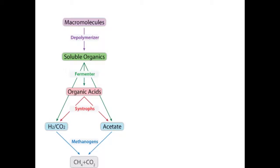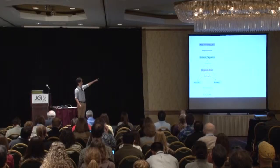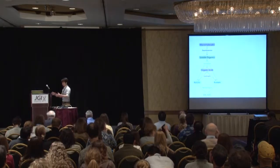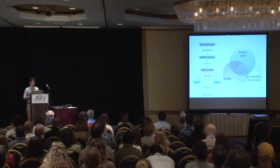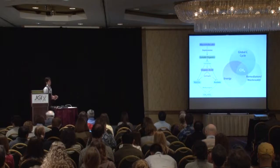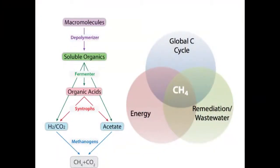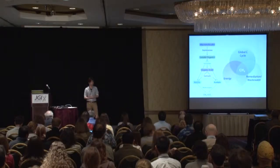Just to introduce methanogenic ecosystems: you have about four simple trophic groups — depolymerizers, fermenters, syntrophs, and methanogens — interacting to degrade macromolecules down to methane. This is interesting because it's an important component of the global carbon cycle — groundwater, sediments, soils, even engineering systems like bioremediation and wastewater treatment. Methanogenesis is a very important component of all these.